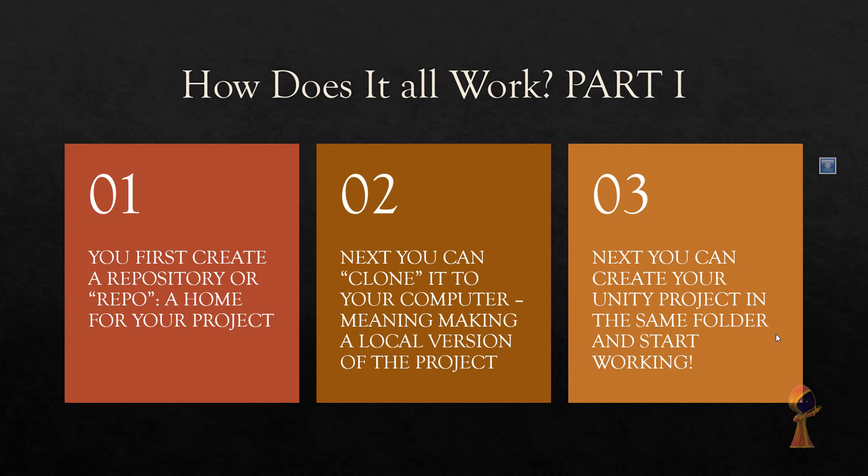So how does it all work? Let's take a look at the big picture. Before we get into the jargon for Git and GitHub, let's start with a small definition — it's called a repository. A repository is the home for your project. What you do is first create a repo, then clone it, which means making a local version of the project. Finally, you can create your Unity project in the same folder and start working. It's that simple.